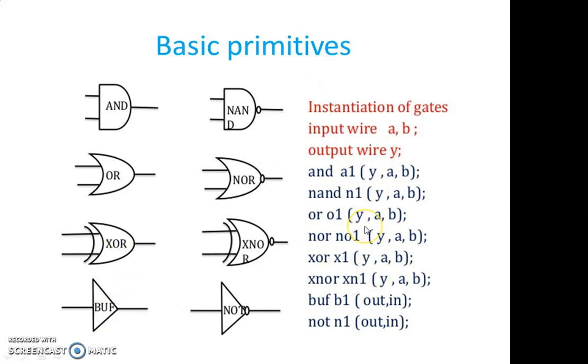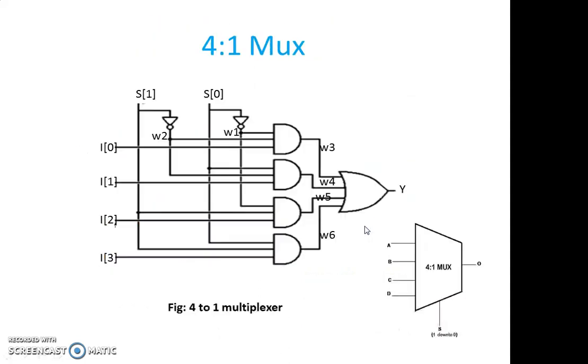Now let us see in some example, how we can write a circuit. Here I have taken a simple example for a 4 to 1 mux. If you are seeing the 4 to 1 mux, if you have a basic idea of multiplexers, you will know that it is going to have two select lines.